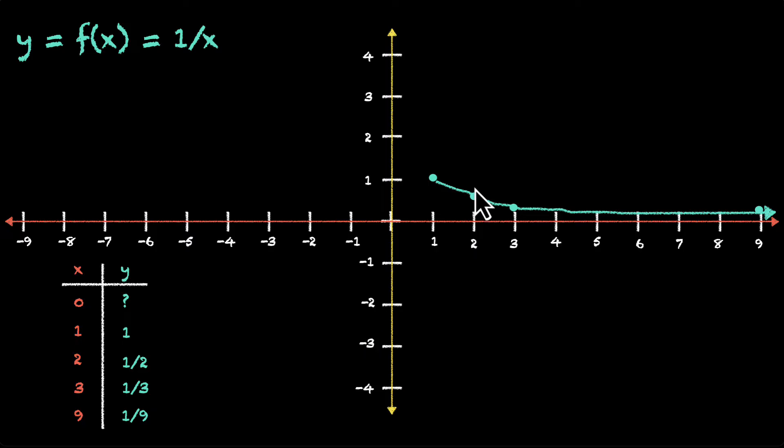Let's plot some more points. Let's plot some negative points. Okay. Let's put in minus 1. Reciprocal of minus 1 will be minus 1. Minus 2 will give us minus half. Minus 3 will give us minus 1 by 3. And then like 9, we'll have minus 9. This should give us minus 1 by 9. Yes. So let's plot these points.